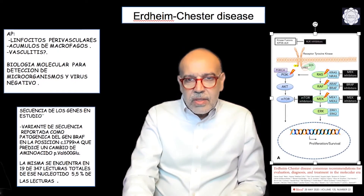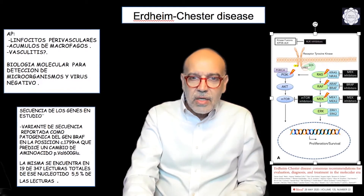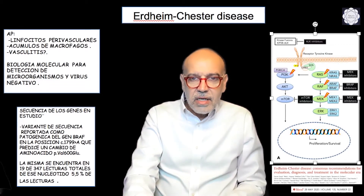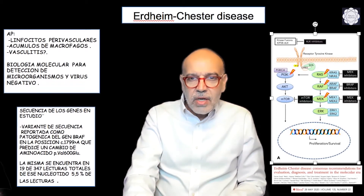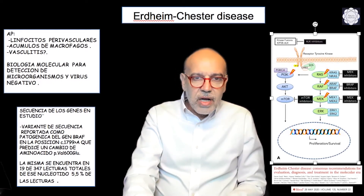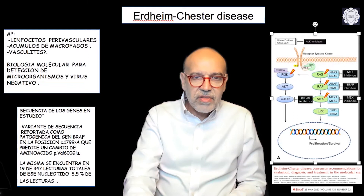There are reported other mutations at the level of RAS and MEK in histiocytosis, including some possible mutations in the phosphatidylinositol kinase / AKT pathway related to mTOR, but one of the most frequent related to Erdheim-Chester disease — occurring in around 80 percent of cases — is the mutation of VRAF, the V600.